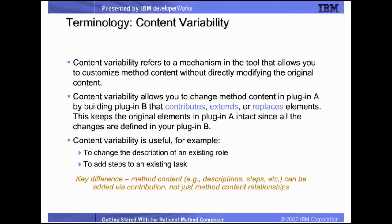We use content variability to customize content by merely defining the changes from the original model for this particular configuration. This might mean adding one additional task to a standard role definition or responsibility for an additional work product to this unique process. An example might be that for a specific project, the role of business analyst has an additional task that produces a unique audit document required by the customer for their management purposes. We would use the base business analyst role definition in our method, but we would add the new task and work product to it.